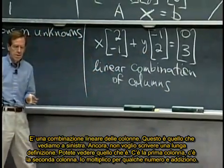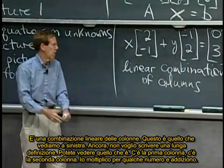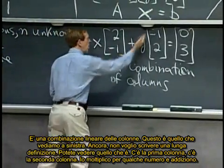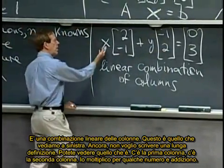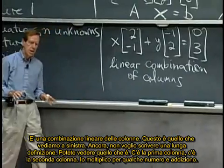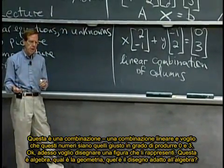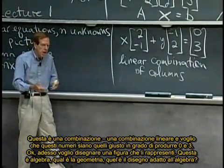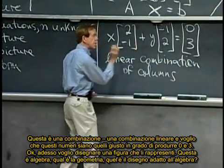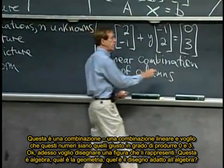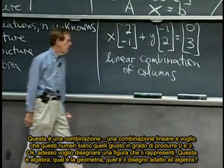Again, I don't want to write down a big definition. You can see what it is. There's column one, there's column two. I multiply by some numbers and I add. That's a combination, a linear combination, and I want to make those numbers the right numbers to produce 0, 3.